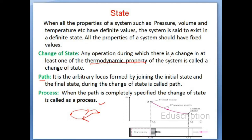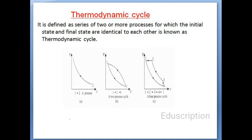You can see that this is a process because the direction sign is there — this is the initial state, this is the final state, and the process is going in this direction, so the path is specified and it is called a process. Now the last one is the cycle. A thermodynamic cycle is defined as a series of two or more processes for which the initial state and final state are identical to each other. So when the initial and final states are both identical, that is known as a thermodynamic cycle.